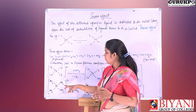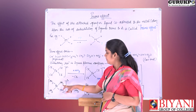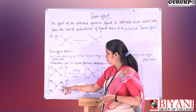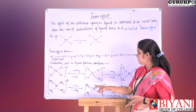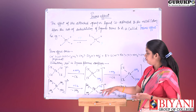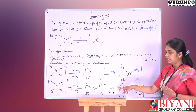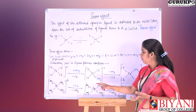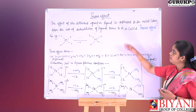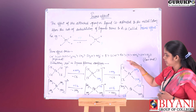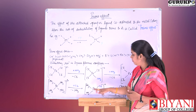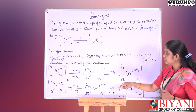Here is another example to explain the trans effect. When chlorine attacks this molecule, one ammonia is replaced by chloro, giving us this product. When another Cl attacks this molecule, the trans effect series decides which ammonia is replaced. We have ammonia, ammonia, ammonia, ammonia, and chloro — the trans effect determines which ammonia is substituted.